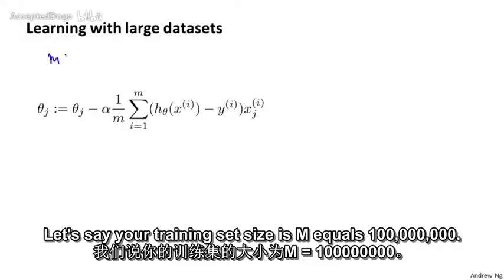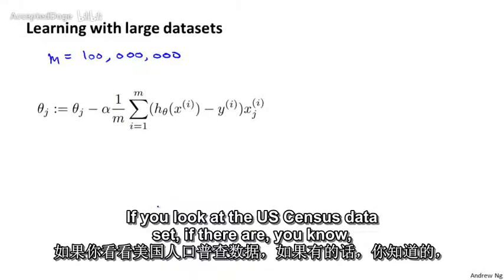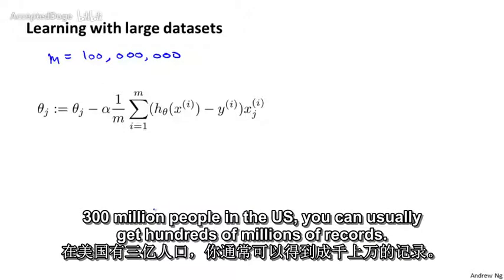Let's say your training set size is M equals 100 million. And this is actually pretty realistic for many modern data sets. If you look at the US census data set, if there are 300 million people in the US, you can easily get hundreds of millions of records.